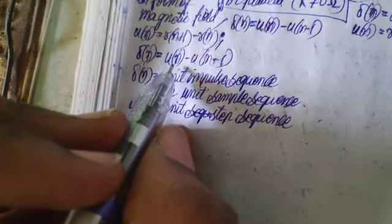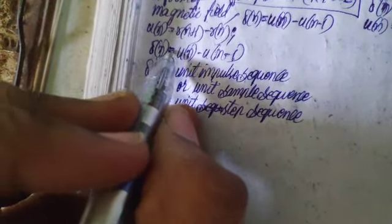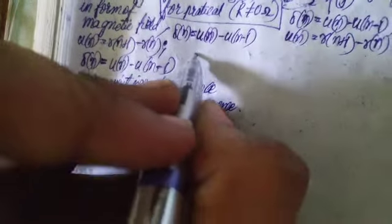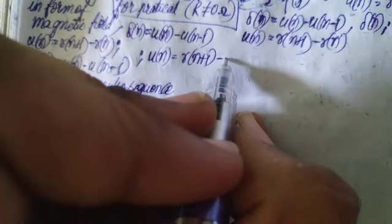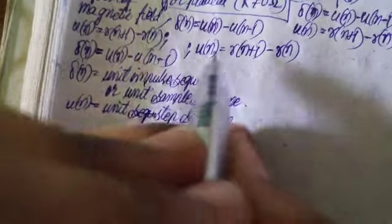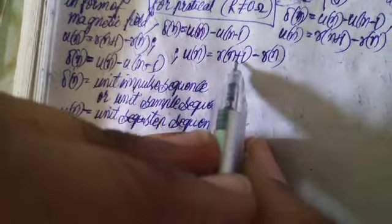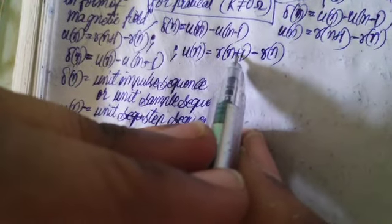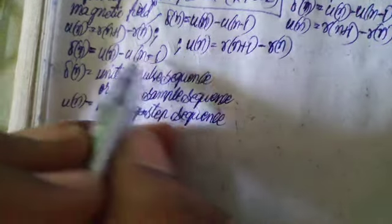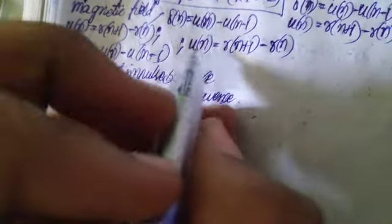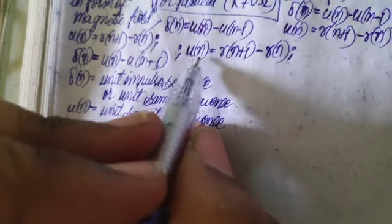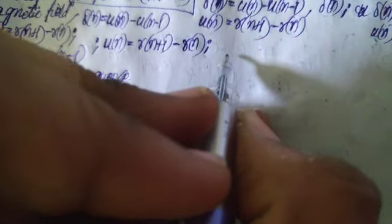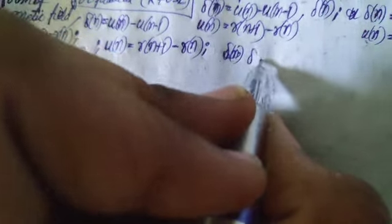So this is how you can convert from the unit step to the impulse sequence. When you talk about u(n), we can get that from the ramp sequence: r(n+1) minus r(n). In both cases there is a minus sign between the two terms and a one-step difference between the terms, which is how I remember it. This is about how to convert or get one type of signal from another.